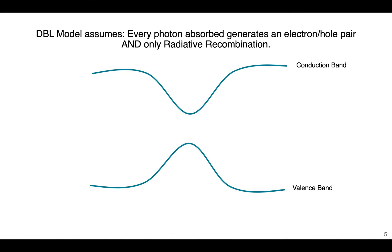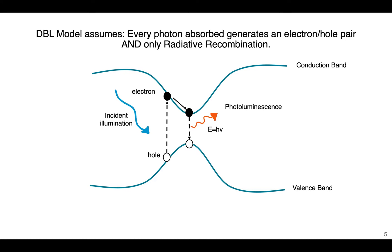First we need to know what the model assumes. The Detailed Balance model assumes that every photon absorbed generates an electron-hole pair and only has radiative recombination processes. If we look at the conduction band and valence band with incident AM1.5G illumination, we can separate an electron-hole pair — we excite an electron to the conduction band, it relaxes, recombines with a hole in the valence band, and emits a photon, also known as photoluminescence. This is called radiative recombination.